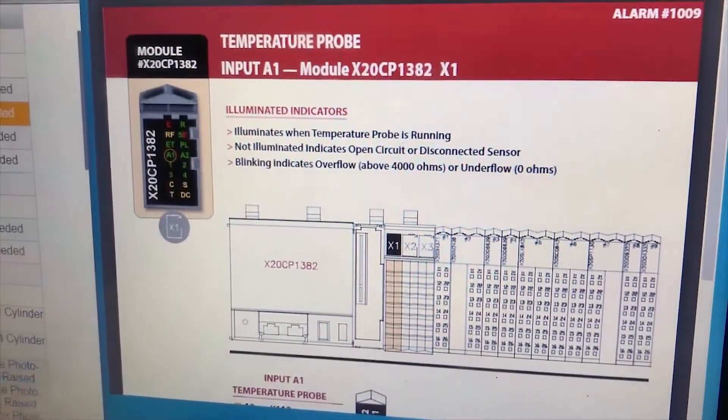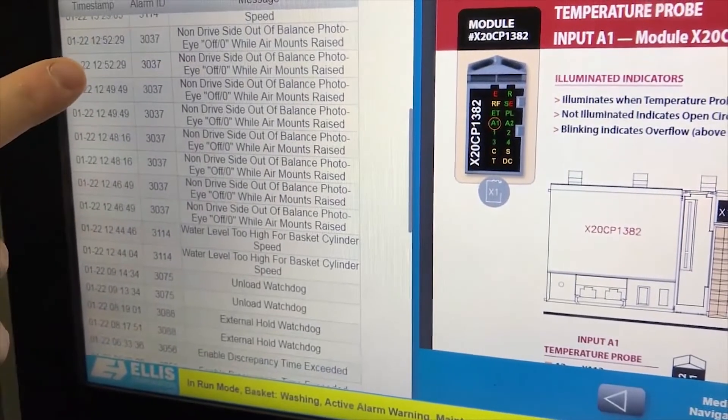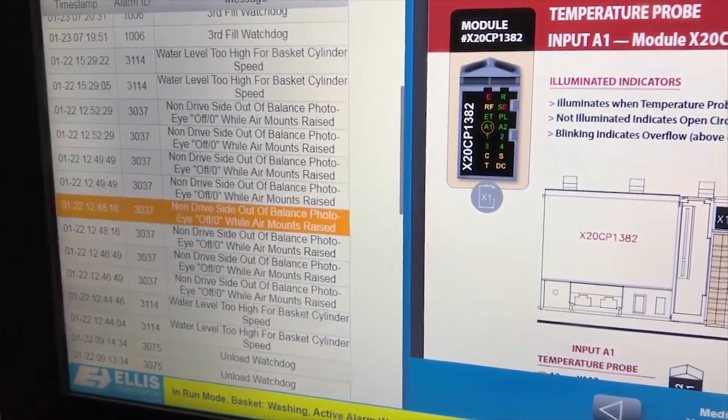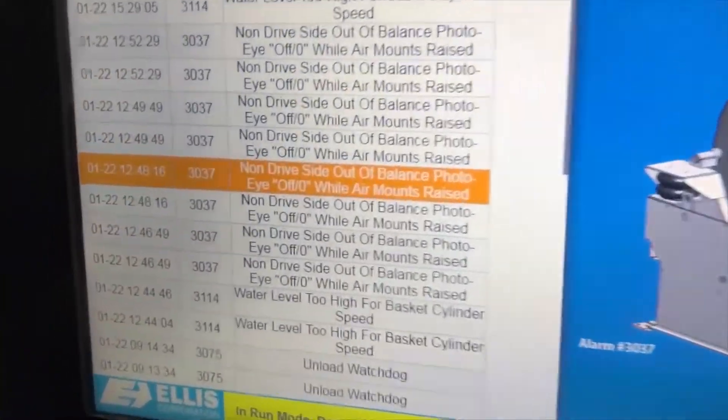Uptime also includes safety features, such as two-hand cycle start control, that minimizes the possibility of injury.